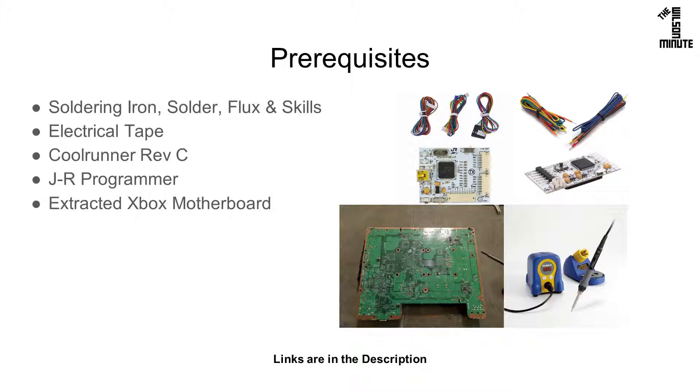You will also need a CoolRunner and JR programmer. You can find these on eBay. Finally, you will need the motherboard to be removed from your 360. I personally prefer to also remove the heat sinks.